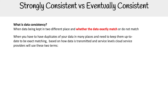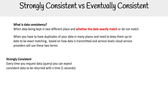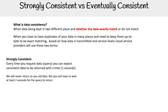They'll use these two terms: strongly consistent and eventually consistent. Strongly consistent means every time you request data, so you query data, you can expect consistent data to be returned within a defined time — they might say within 10 milliseconds, 100 milliseconds, or one second. They will never return old data to you, but you'll have to wait at least that defined amount of time for the query to return.